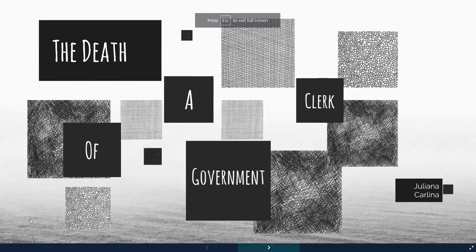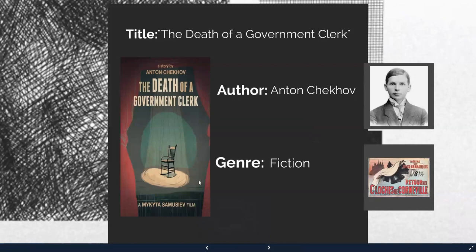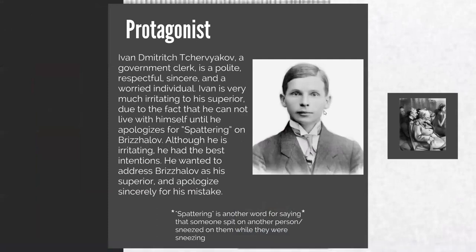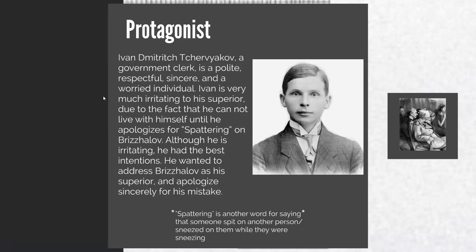So, this is The Death of a Government Clerk — a story you will be reading. As you can see, the author is Anton Chekhov, and the genre is fiction. The protagonist, the main character, is Ivan Dimitrich. He is a government clerk — polite, respectful, sincere, and a worried individual. His nature is irritated. The writer starts by giving you a hint about this character. Let's see if this person is going to be developed or not.